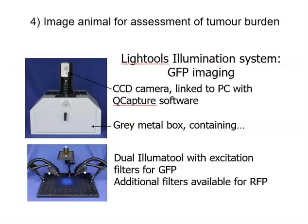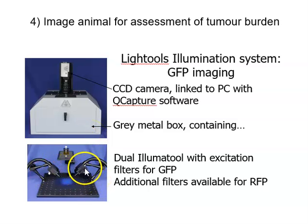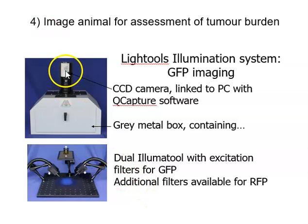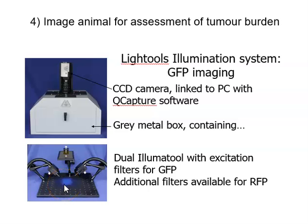Once GFP-expressing tumour cells are growing in animals, imaging is performed using a metal box containing two LED light sources emitting intense blue light via fibre optic cables. On top sits a very sensitive CCD camera linked to image analysis software. The mouse is placed under the camera under the intense blue light, the tumours glow bright green, and a picture is taken.